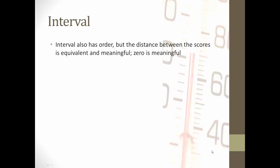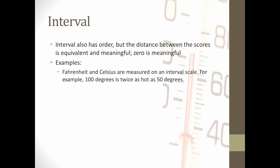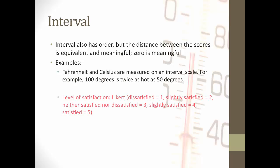Now, interval is another level of measurement. Interval has order, but the distance between the scores is equivalent and meaningful. Zero is also meaningful. For example, Fahrenheit and Celsius are measured on an interval scale. A hundred degrees is twice as hot as 50 degrees.